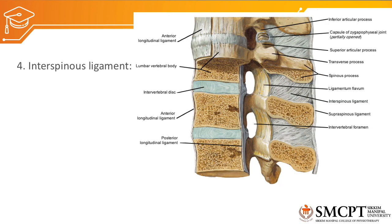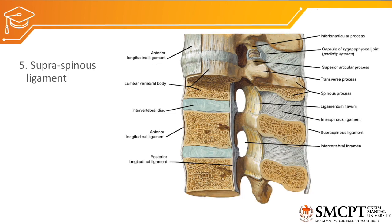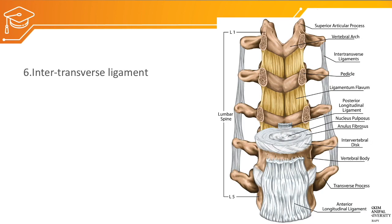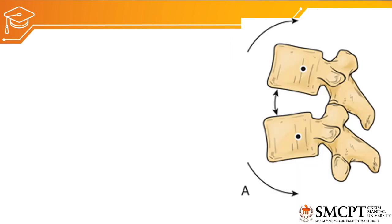The interspinous ligament, present between the spinous processes as discussed for the cervical vertebra, prevents flexion. The supraspinous ligament, running through the tips of the spinous processes of the thoracic vertebra, also prevents flexion. The bilateral intertransverse ligament, present between the transverse processes of the superior and inferior vertebra, also prevents flexion.